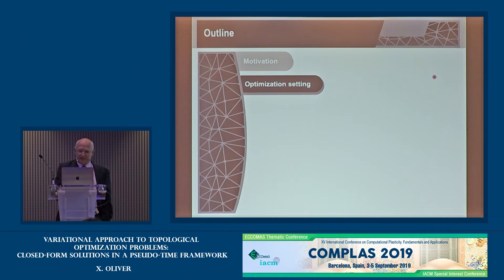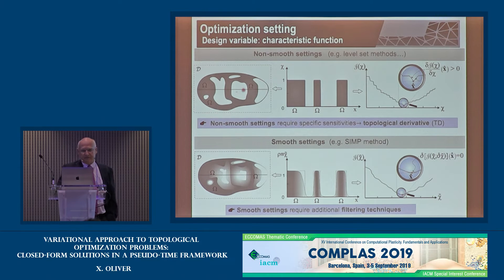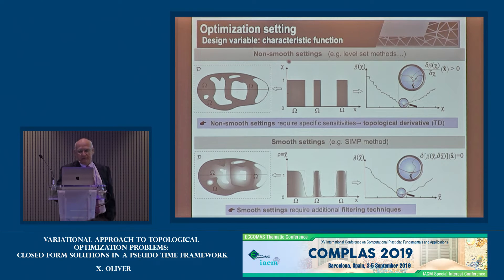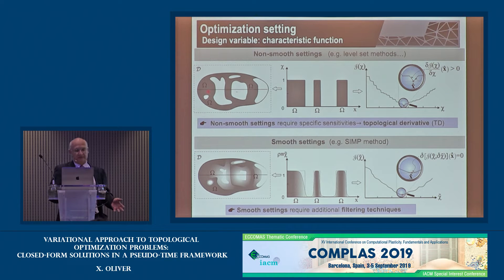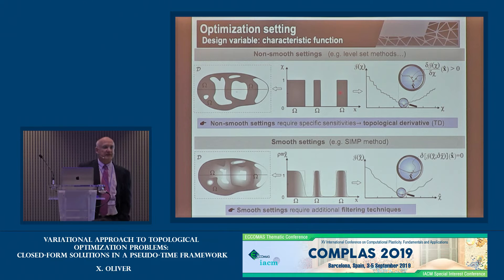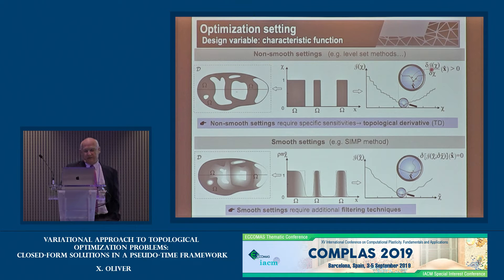Let me now present the optimization setting we are considering. We have several options for dealing with the topology optimization problem. The first concerns the design variable — the characteristic function that takes values 1 or 0. This is completely non-smooth. The good news is that the result is what is called the black-and-white result: either material is present (black points) or there are voids (white points).